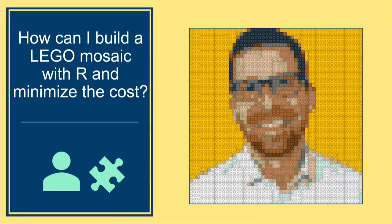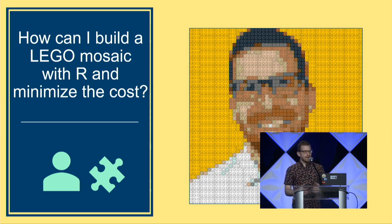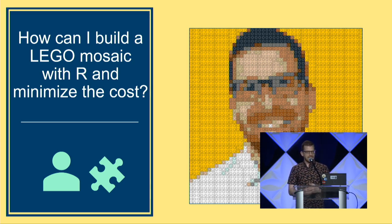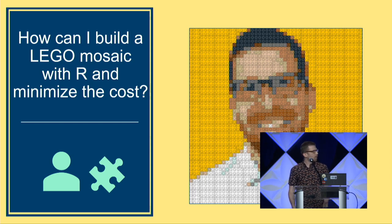Side projects are great because sometimes they can become real things and land you a job. A while before I joined my current company, I wanted to figure out how to use the tidyverse to build a Lego mosaic as cheaply as possible. It's a relatively simple problem: you take an image, you pixelate it, you change every pixel to a Lego color and effectively you have bricks. Then you combine single adjacent pixels or bricks of the same color, and that saves you money. I shared this on Twitter in a blog post, people really liked it, and that motivated me to keep working on it. I kept developing this, added new features, learned a lot of packages to make it work, and figured out how to put it into a package of its own.